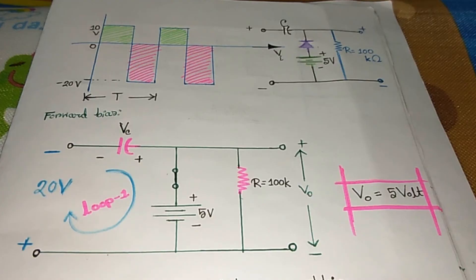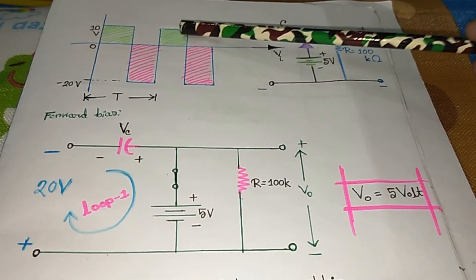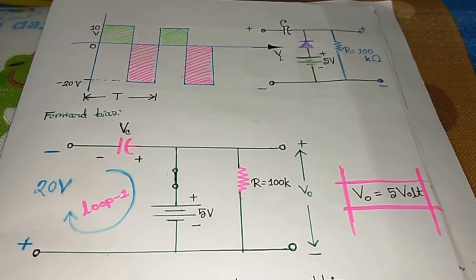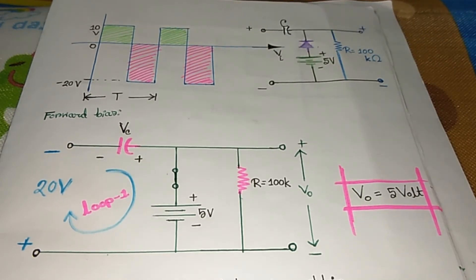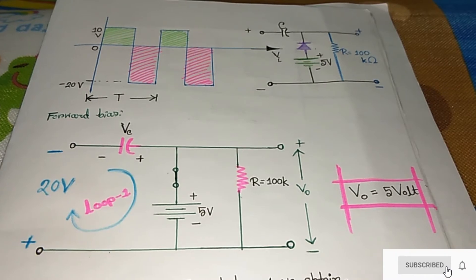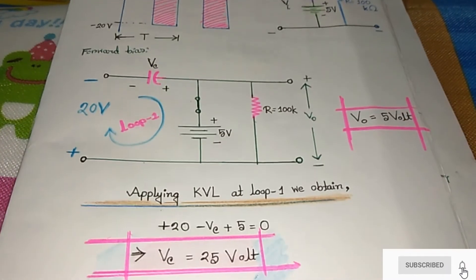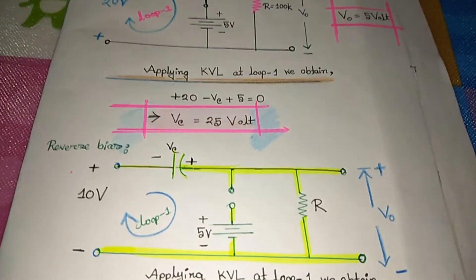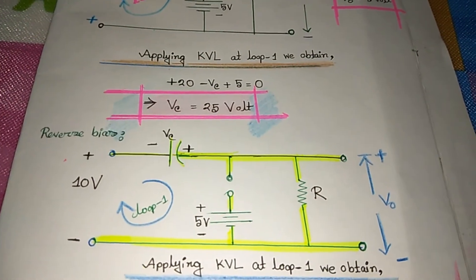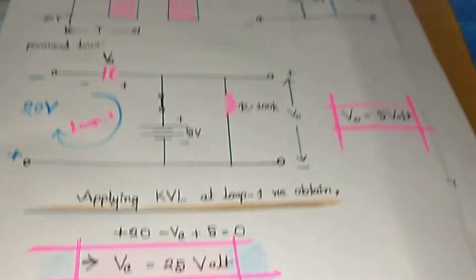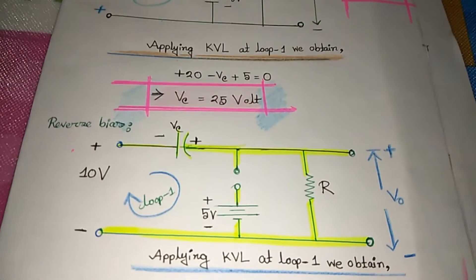Now let's move to the next cycle — the positive cycle. We draw the circuit diagram. If we have plus 10 volts, the circuit becomes open circuit because the diode gets reverse biased. That's why the diode terminal becomes open.